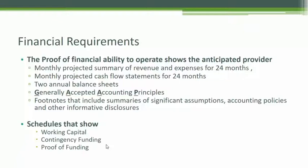This is a very complex financial statement that's required by ACA. If you look at it, it requires revenue and expense projections for 24 months, projected cash flow statements for 24 months — that's your change in cash, accounts payable, accounts receivable, all those balance sheet items — two annual balance sheets, all of this prepared in accordance with generally accepted accounting principles. Maybe you've heard the term — it's called GAAP.